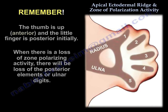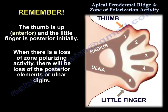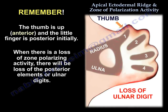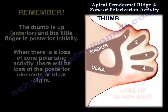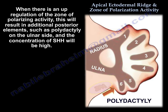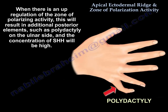The thumb is anterior and the little finger is posterior. When there is a loss of the Zone of Polarizing Activity, there will be loss of posterior elements, or ulnar digits. When there is an up-regulation of the Zone of Polarizing Activity, it will result in additional posterior elements — for example, polydactyly on the ulnar side — and the concentration of sonic hedgehog will be high.